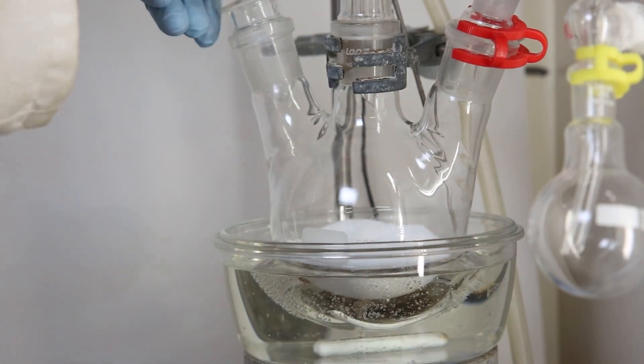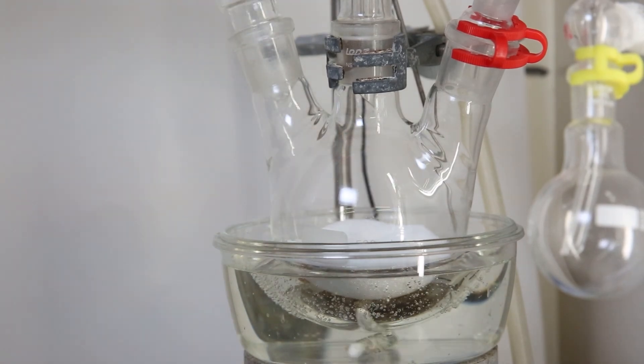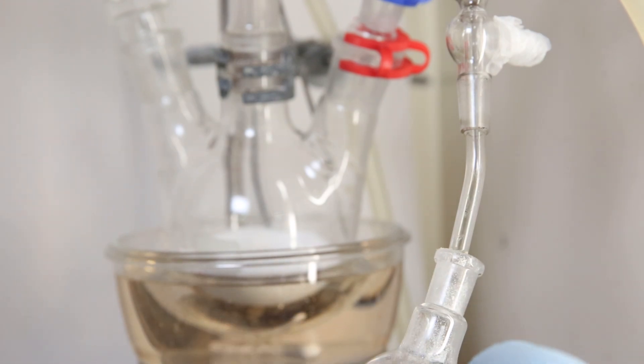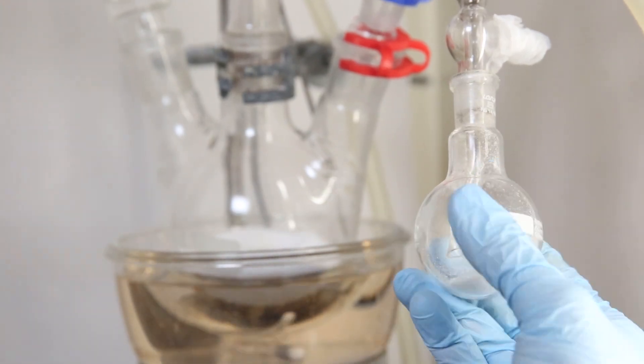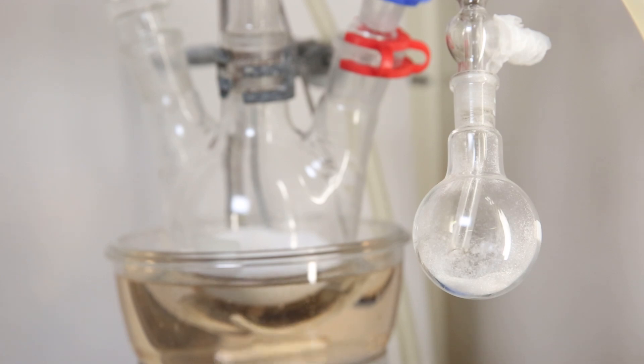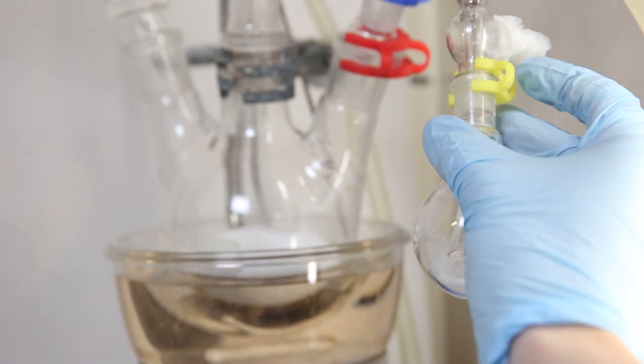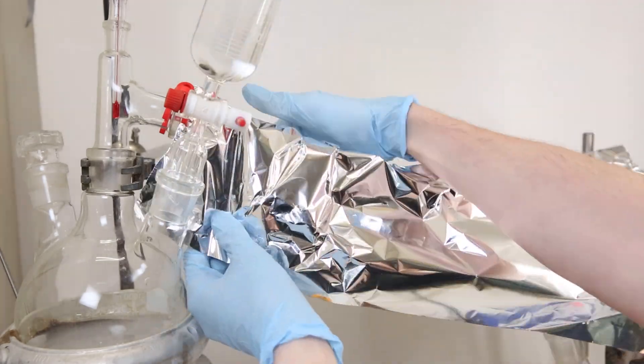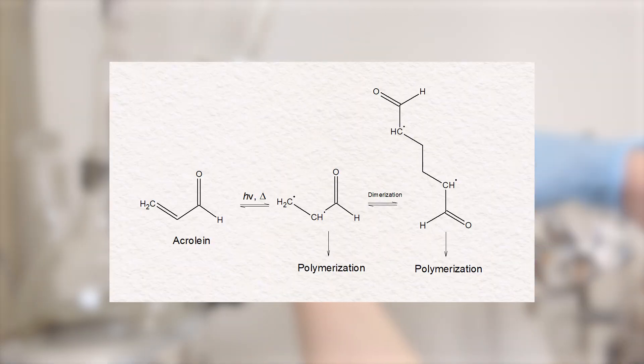Then I close off the flask with a stopper and move on to the second receiving flask. To this flask, I add around 1g of hydroquinone. Now, the last step is to cover the whole apparatus in aluminum foil. Since Acrolein can start to polymerize due to light, especially when hot, it is best to minimize any light exposure.